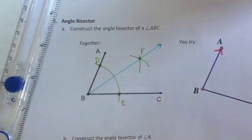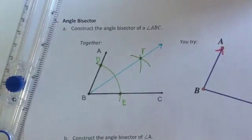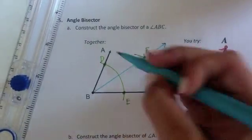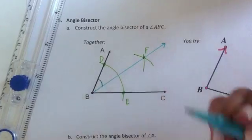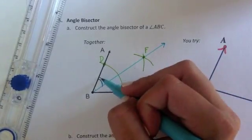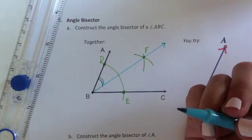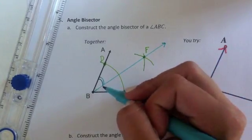So now there's a very important conclusion that we can make from this construction. And it's that angle ABF is congruent to, we'll use two arcs here, is congruent to angle CBF.